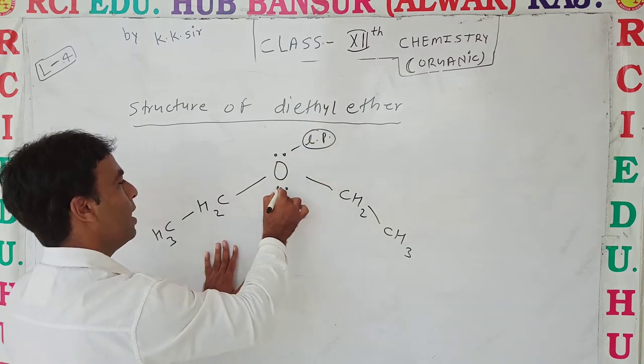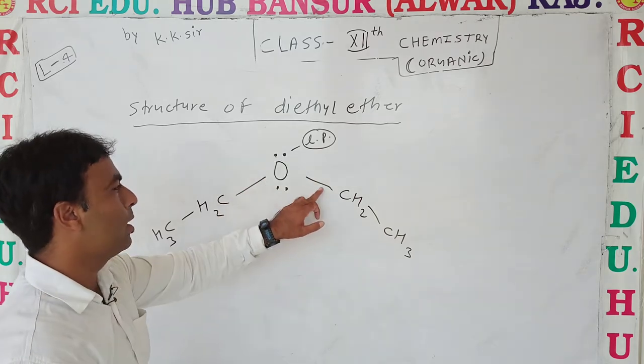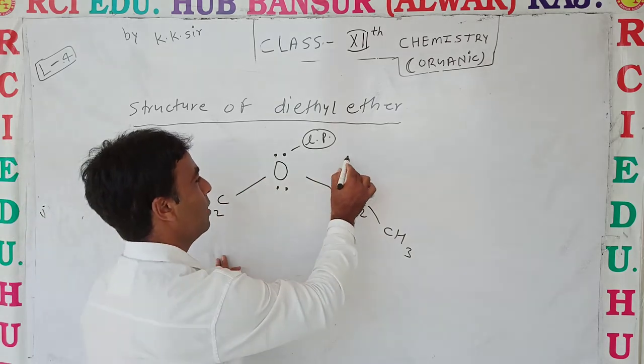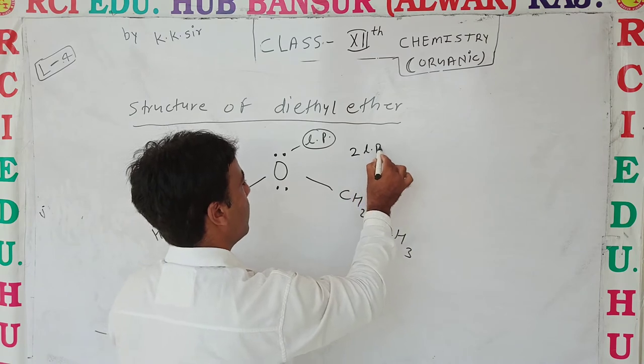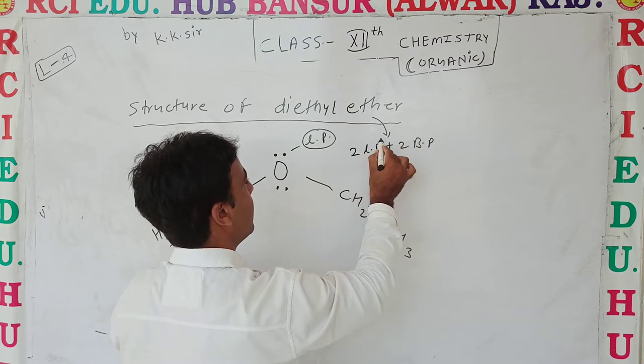The oxygen atom has two lone pairs and two bond pairs also present. Two lone pairs plus two bond pairs are present in diethyl ether.